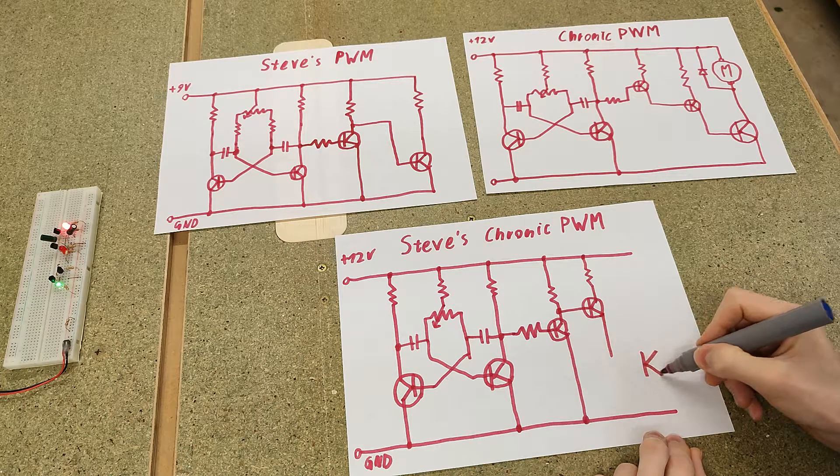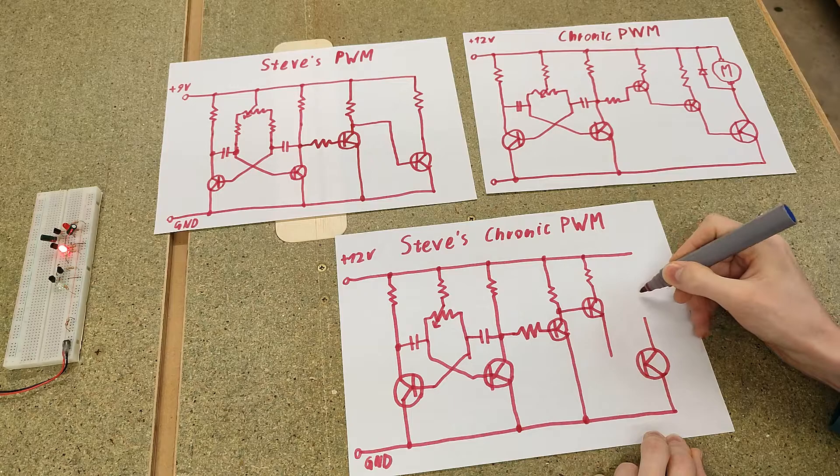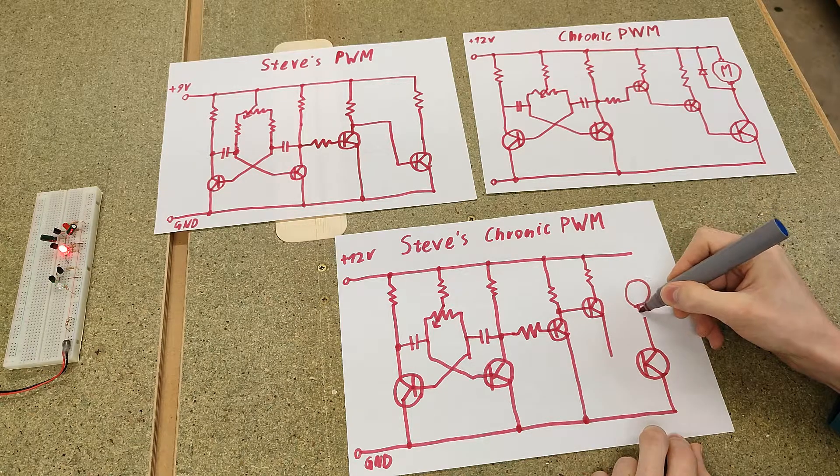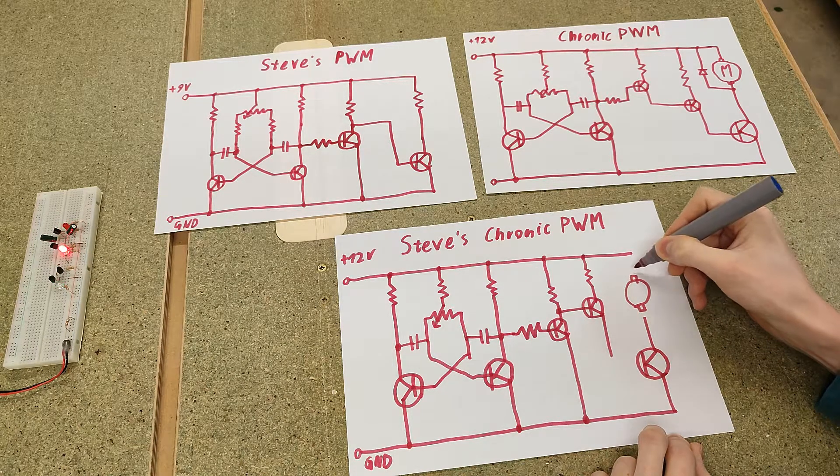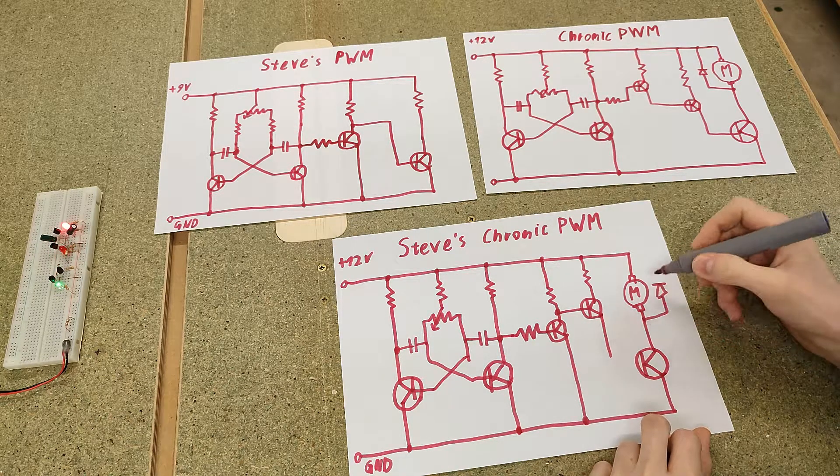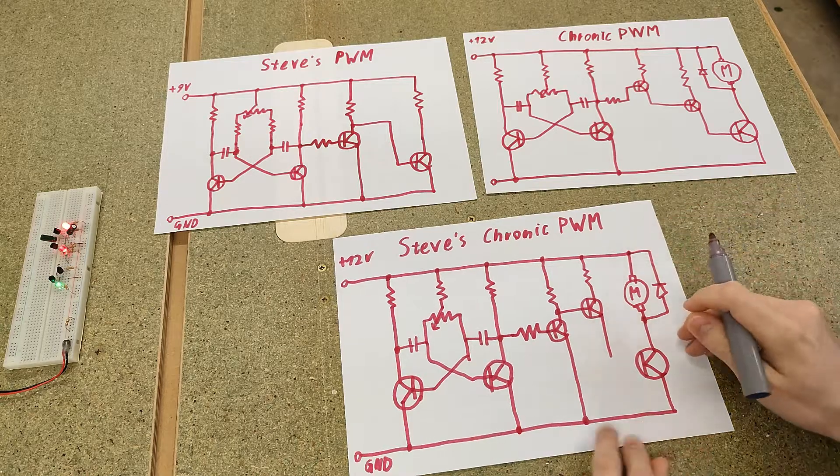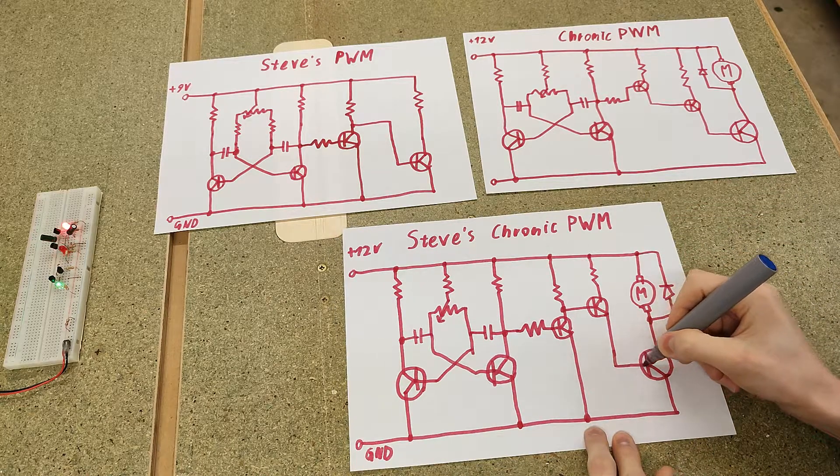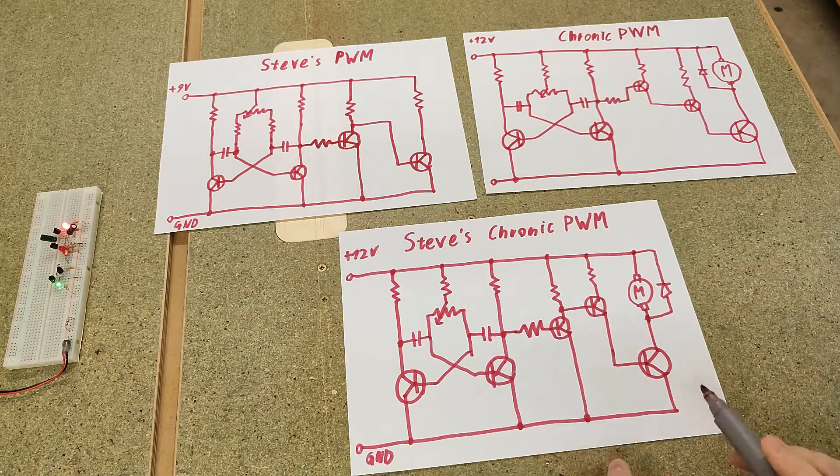And then finally the power transistor. It's going to be a lot bigger, just the way I draw things. And now our load, it'll be a motor like usual. The reverse voltage protection diode, I'm going to put it here. And now this just feeds into the base of the power transistor.